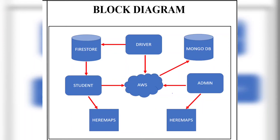The student can access this location from the database in view mode via internet access. The HereMaps tool uses these coordinates to plot the location in the form of human-readable maps. This same feature is also available for the admin, who also has control over other operations such as allocating buses to drivers, adding new buses, or deleting buses. The login, sign-up credentials, bio data, and other CRUD data of drivers, admins, and students are stored in the MongoDB Database.